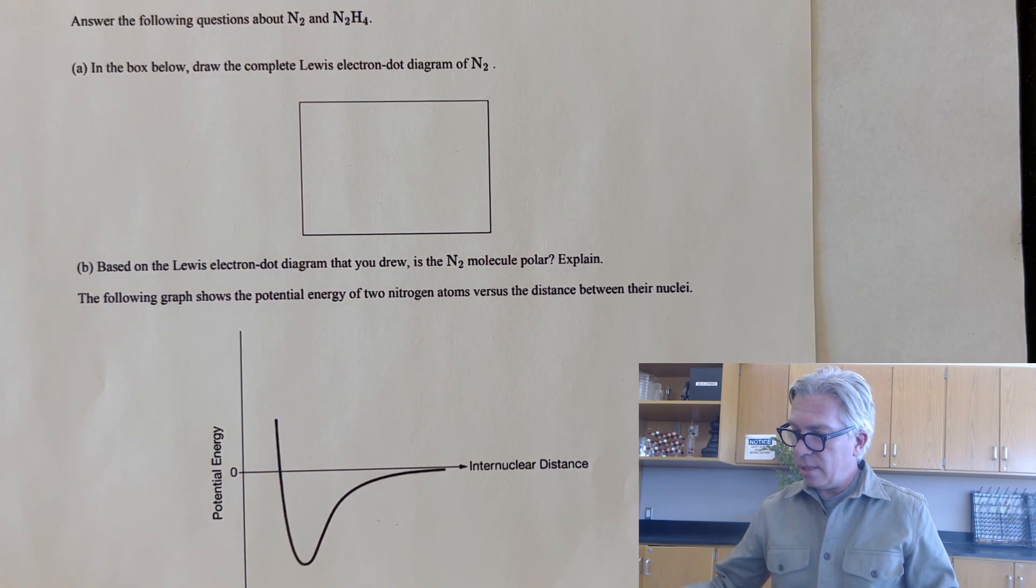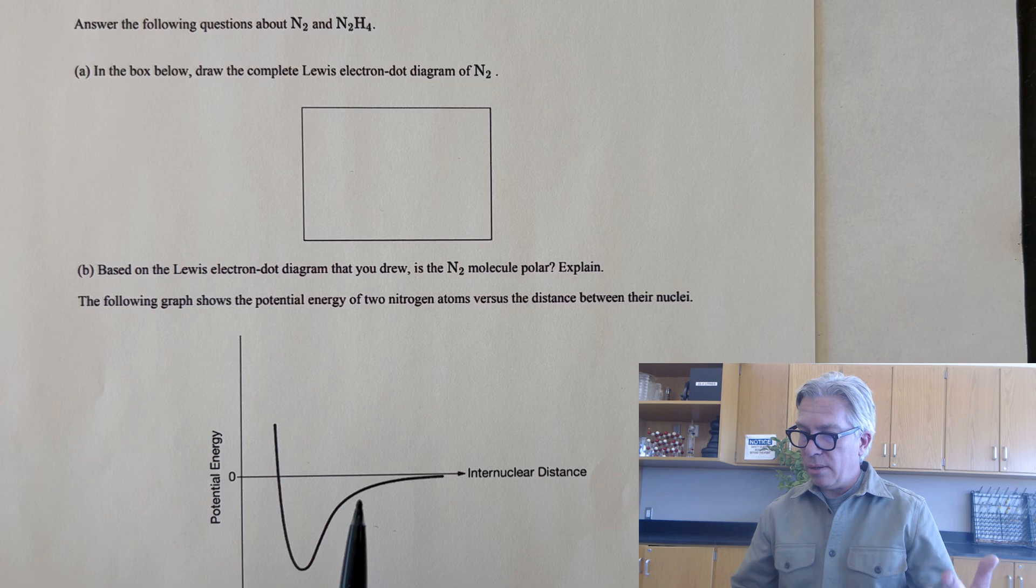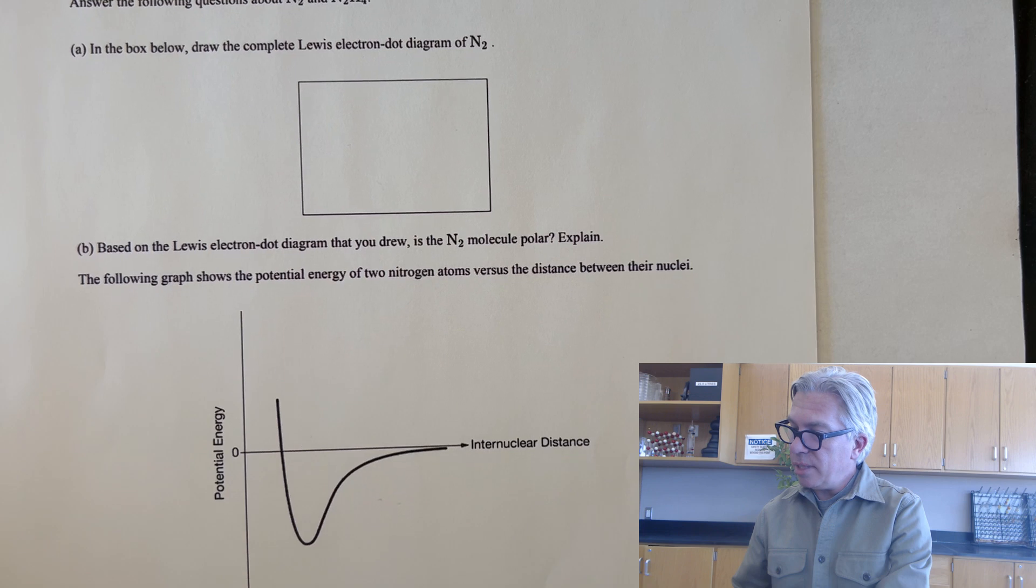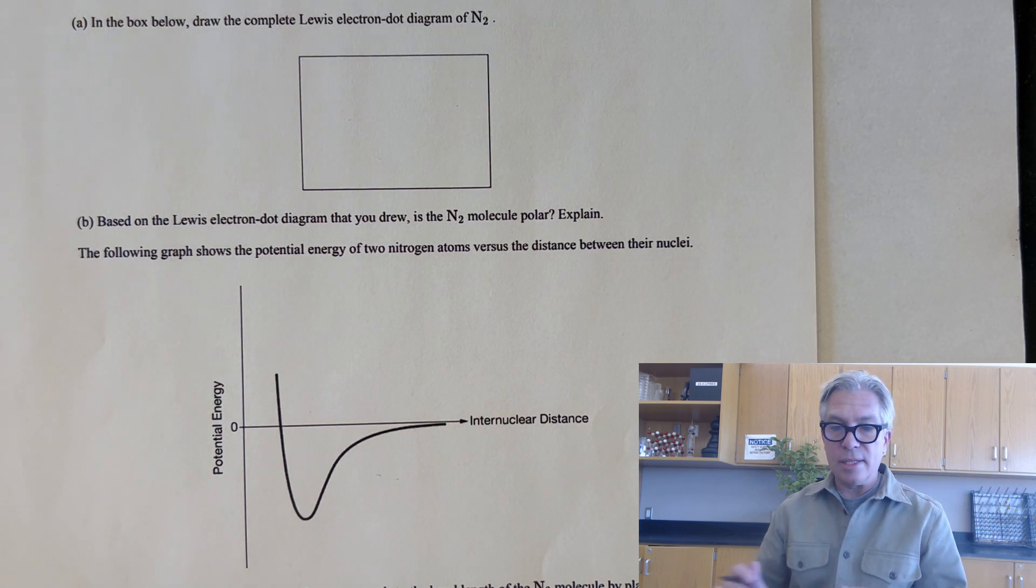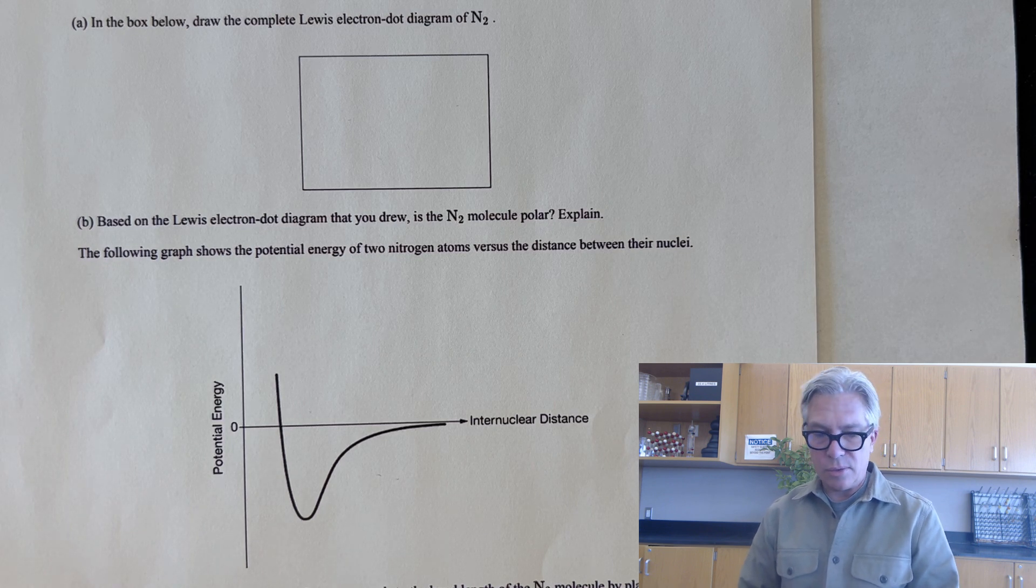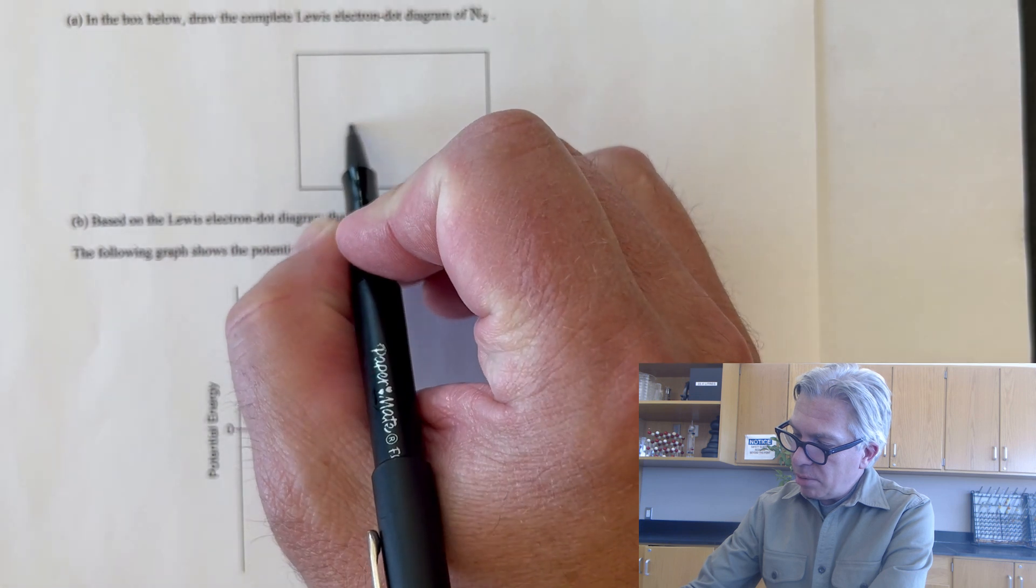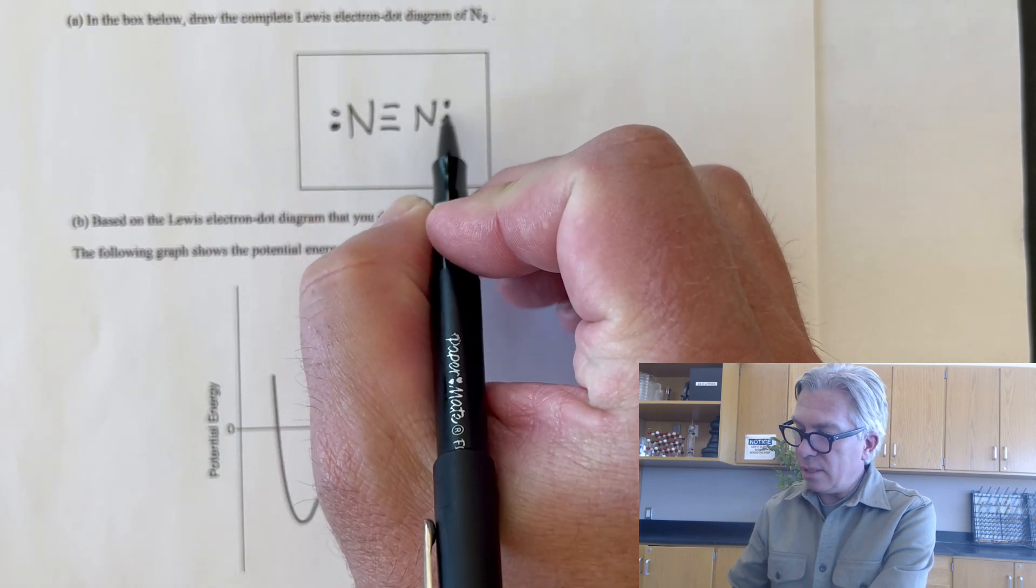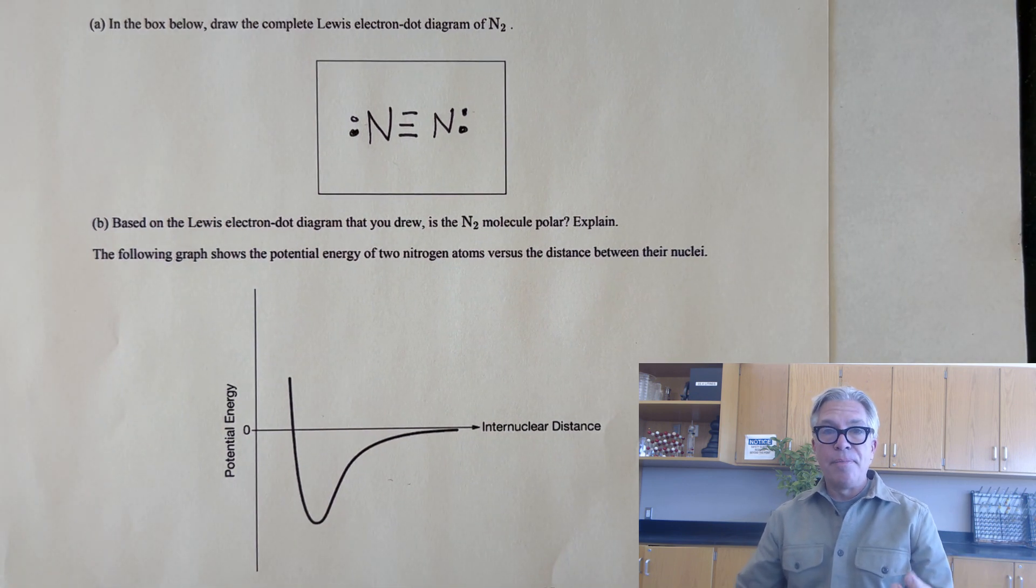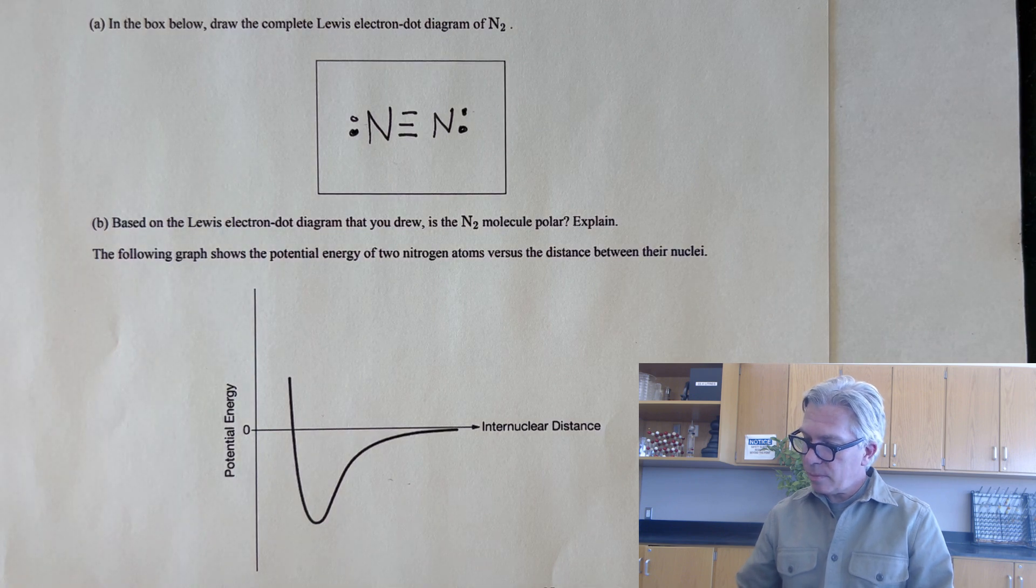And now I'd like to share with you an FRQ style question with two parts. It says, answer the following questions about N2 and N2H4. In the box below, draw the complete Lewis electron dot diagram for N2. Take a moment and pause the video and see if you can draw the correct Lewis structure for nitrogen molecules. Okay, great. And if you figured out that nitrogen actually needs a triple bond, that's very important for the next question because you only have 10 electrons and you have to give both nitrogens an octet. So nitrogen molecules, the ones you're breathing right now in the air that make up 78% of the air, are triple bonded nitrogens.